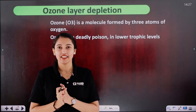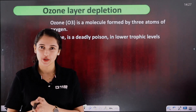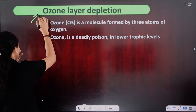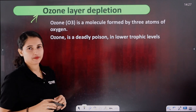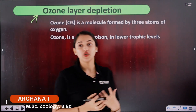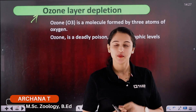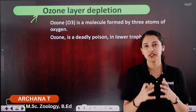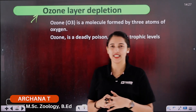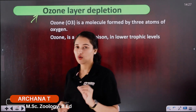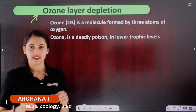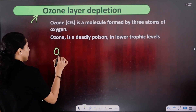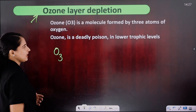This is an important topic for us to discuss: the topic of ozone layer depletion. What is ozone layer depletion? First, what is ozone? It is a molecule. Its chemical formula is O3.